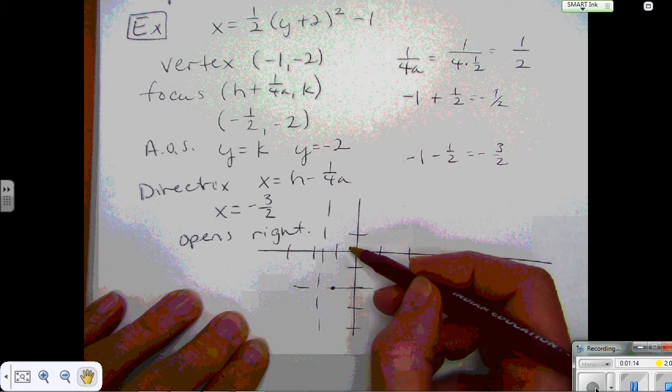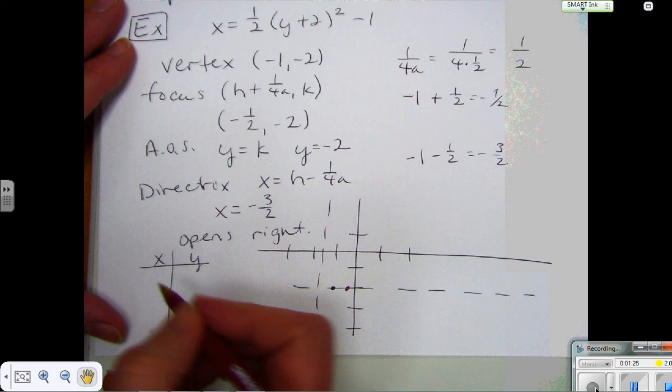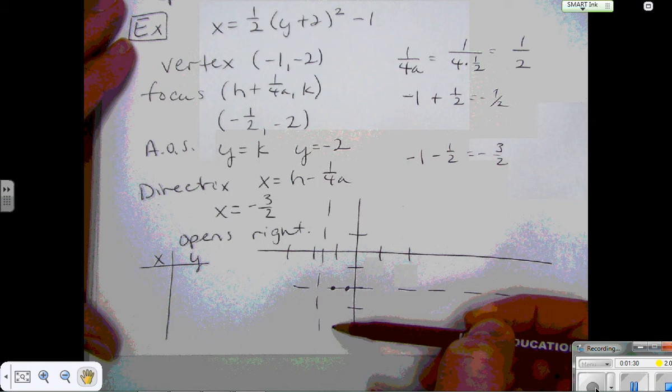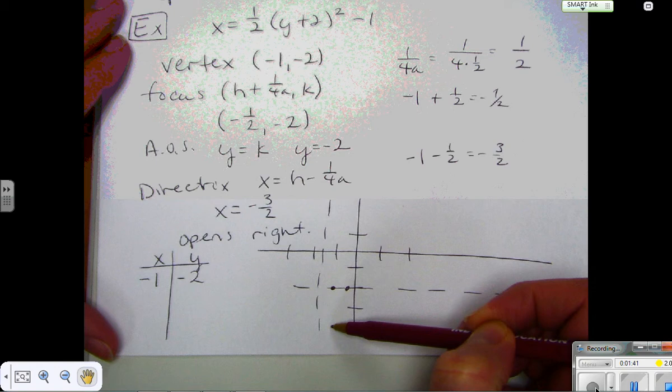So let's get two more points for the parabola so we can get our shape. And since it's horizontal, I'm going to find two values for y on either side of the vertex. So the first point you want to start with is the vertex. You always want to start with that one. And then I can go 2 up and 2 down for my other two y values. So I'm going to use 0 and negative 4.